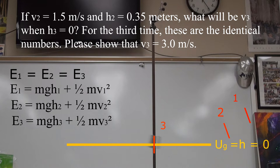The conservation of energy doesn't care about the path taken by the mass as it moves between these three elevations. All that matters is the height above the zero of gravitational energy.